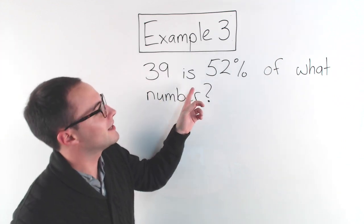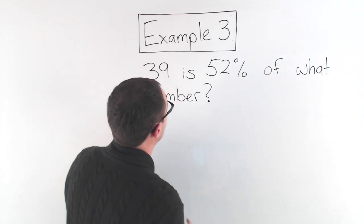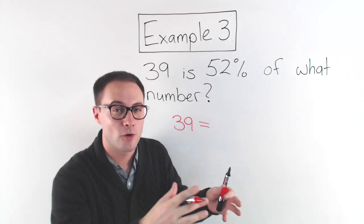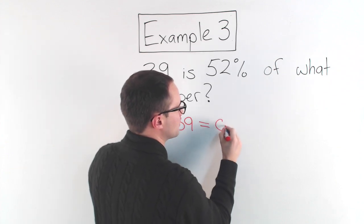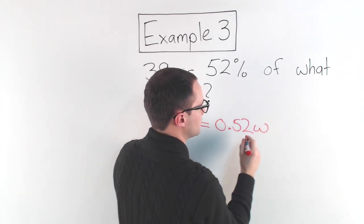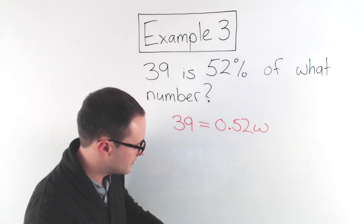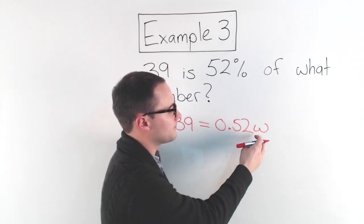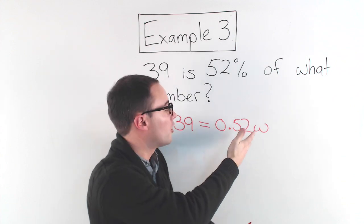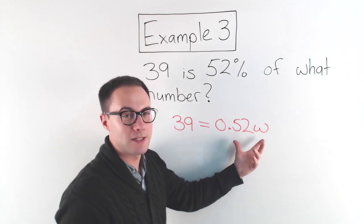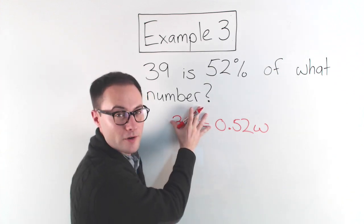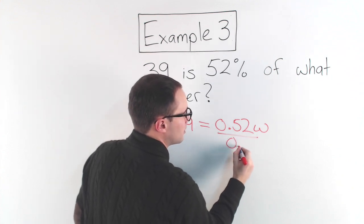All right, here's our last example. 39 is 52% of what number? So here we go. Let's start to translate it. 39 is means equals. 52% we're going to write that as a fraction or a decimal. In this case, I'm going to write it as a decimal: 0.52. And I'm going to show you why in a second. Of what number? So that's going to be our whole. So 0.52w. And the reason I wrote it as a decimal is I'm not multiplying it by any numbers, just w. If I had a number here, maybe I'd write it as a fraction so that I could hopefully simplify it with that. But because I'm going to be solving this by dividing both sides by 0.52, it's a little bit easier to work with as a decimal. So I'm going to divide both sides by 0.52.